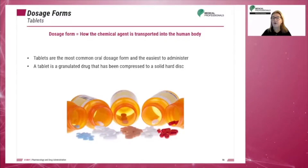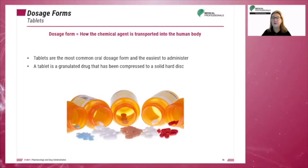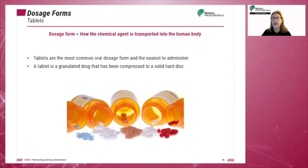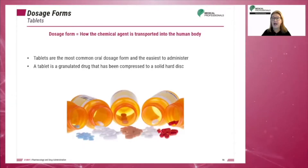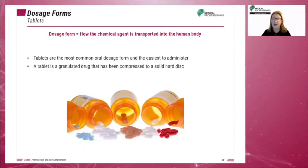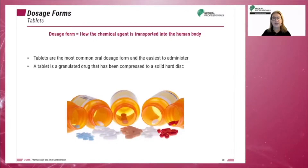Dosage form refers to the type of preparation or the manner in which the chemical agent is transported into the human body. Dosage form may determine the speed or onset of the drug's therapeutic effect. Tablets are the most common dosage form and the easiest to administer. The tablet generally consists of an active ingredient, various fillers, and disintegrants to make the drug dissolve.